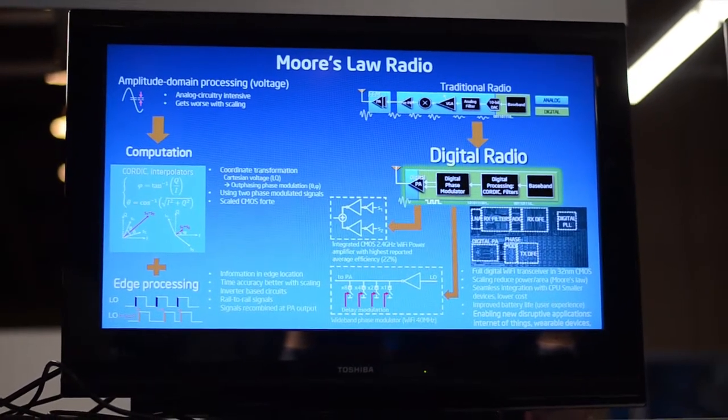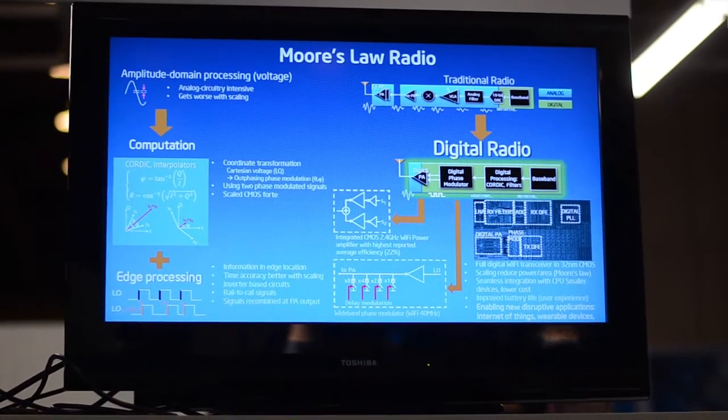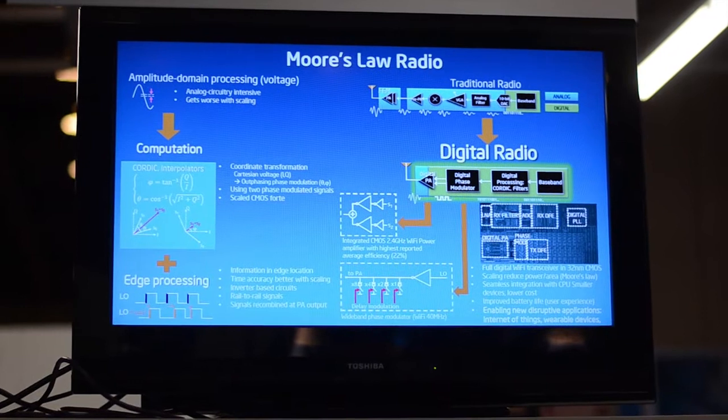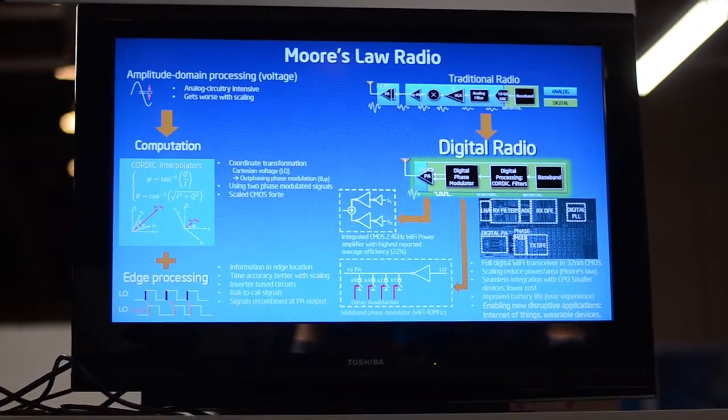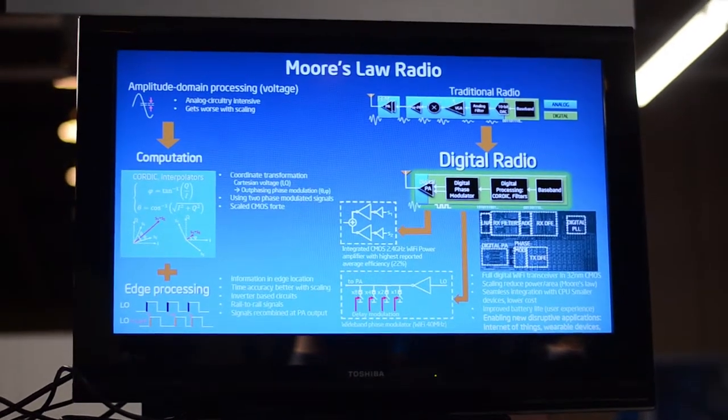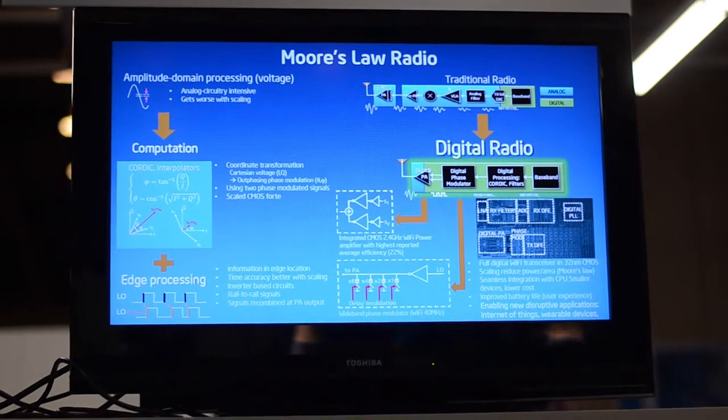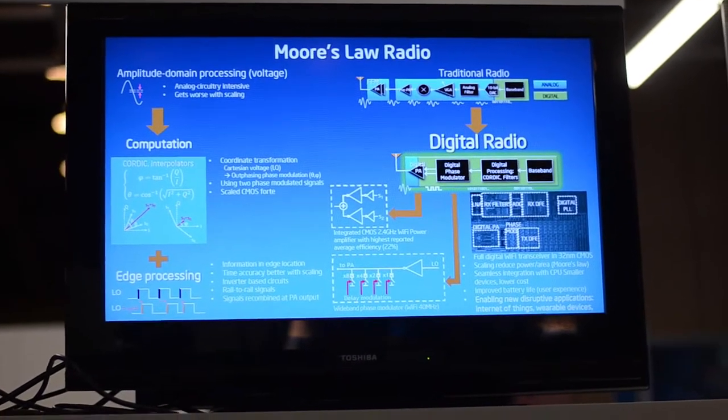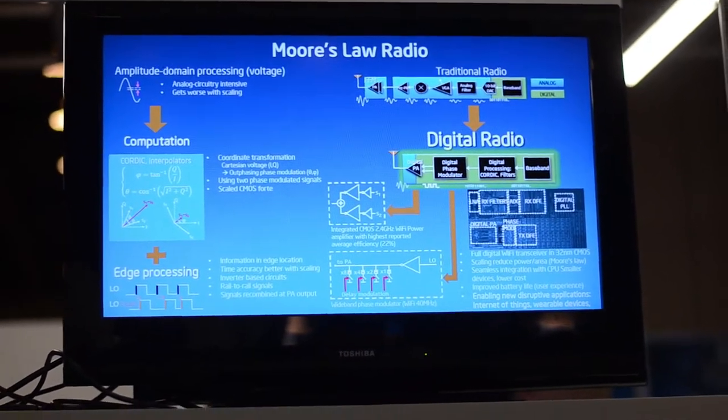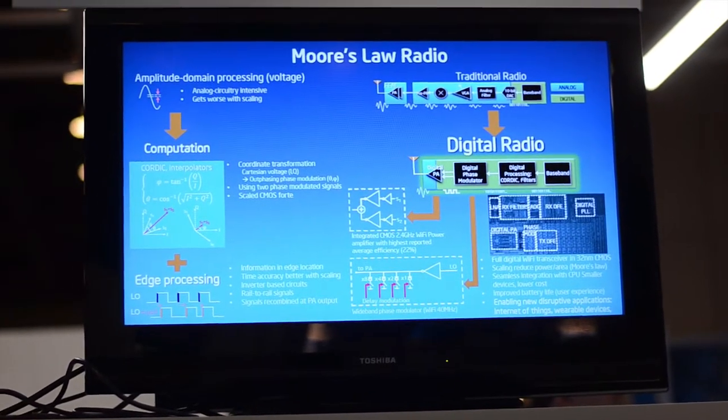So to do this, we change the paradigm from encoding the information in the actual amplitude levels of the voltage, to encoding the information to the time when we actually cross, let's say from 0 to 1. So our voltages are just digital, like 0 and 1, or 0 and VDD. And the information is encoded on the instant of the edge crossing, instead of the voltage level.